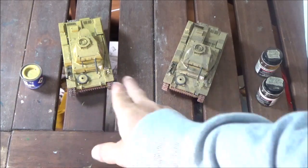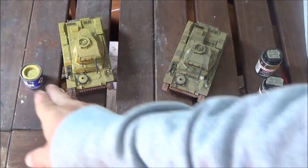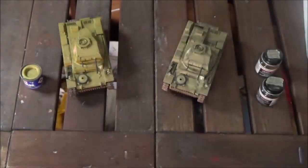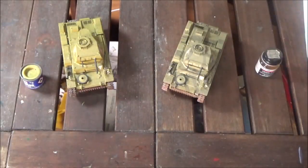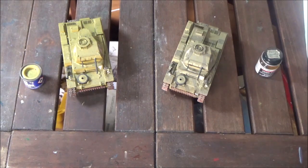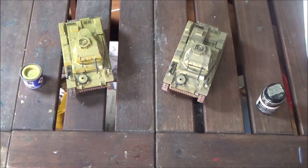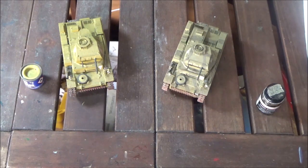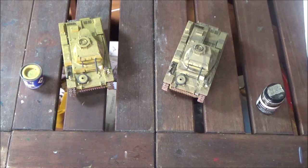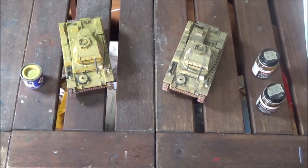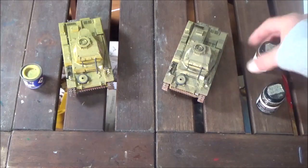For this one I used the Revell dark yellow, and for this one I used Model Master Afrika green brown, this is the 2099, and this is Afrika dark gray, that's 2103. I think they both turned out pretty good. I mean they're simple kits but they turn out really good I think.